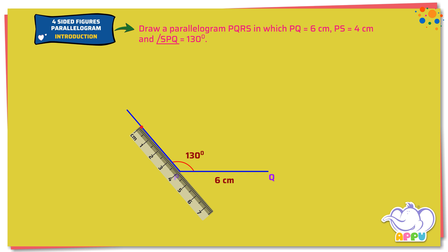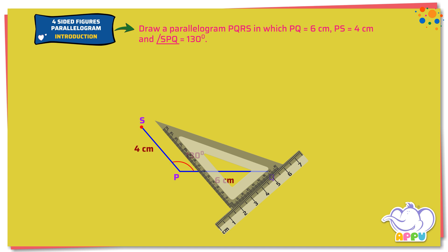Mark S on the line such that PS equals 4 cm. Step 2. Draw a line parallel to PS at Q.